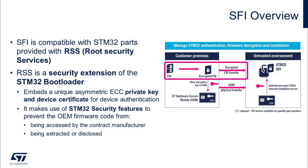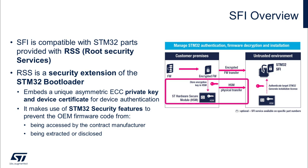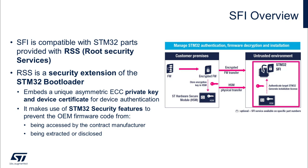The customer is responsible to generate the encrypted firmware from the original firmware image, which is transferred to the untrusted environment along with physical transfer of the HSM card, which stores the encryption key. In the untrusted environment, the HSM card is used to authenticate the target STM32, generate an installation license, and encrypt the firmware to flash it on the target device. This is just an abstract flow of the process, and we will discuss all these steps in detail further in the video.